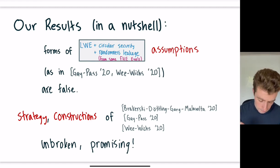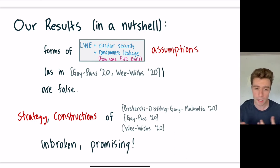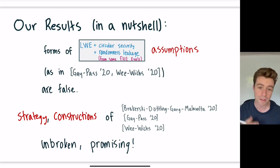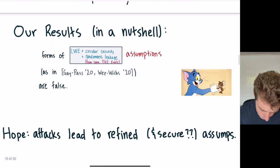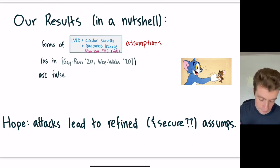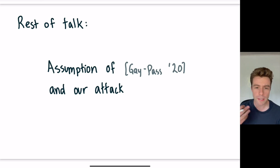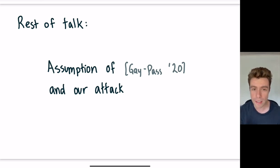However, to be clear, the underlying strategy and constructions of all of these papers are not broken by our work. In particular, the strategy for constructing IO from lattices may well be feasible. It just means that the formulation of the assumptions underlying them has to be modified. Our hope is that these attacks can lead to refined and ideally secure versions of these assumptions, and eventually to post-quantum secure IO. For the rest of the talk I'll focus on just one of these two constructions, the work by Gay and Pass.